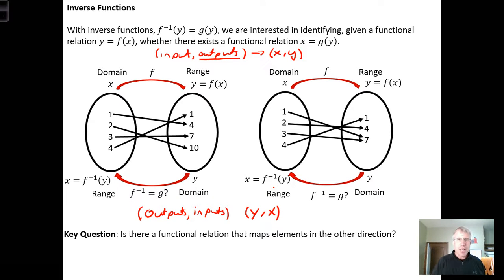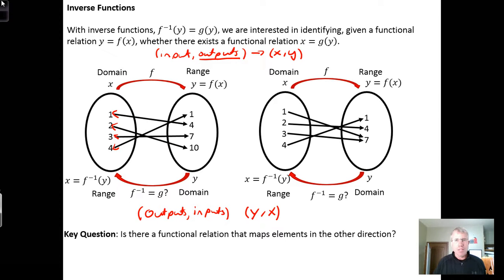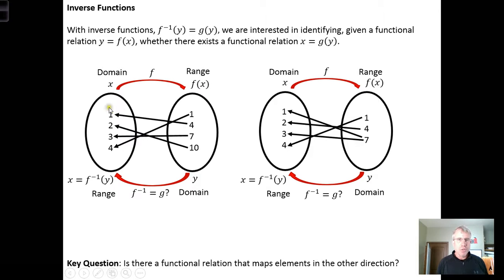In other words, we're interested in determining whether there's a functional relationship that takes Y as the input and outputs the X value that generated it. What we're asking is: if I take the arrows and reverse their direction so the mapping goes the other way, does that relation represent a function? Here I have two functions, and I can reverse the direction of the mapping on each of them, as shown on this slide.